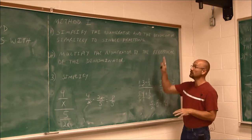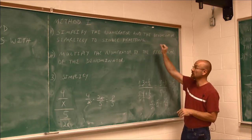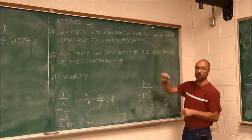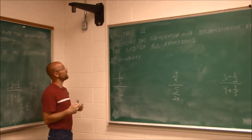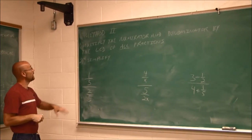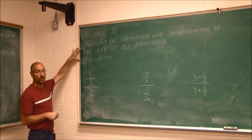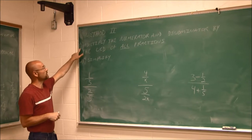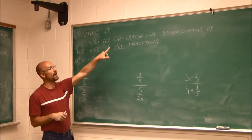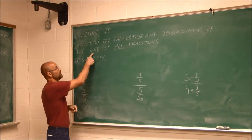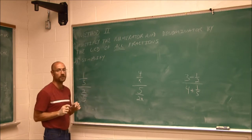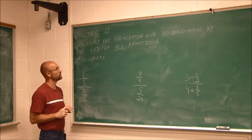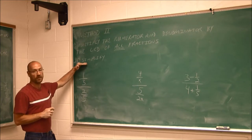So that's Method 1: simplify to a single fraction in the numerator and in the denominator, then multiply by the reciprocal. Method 2 is a favorite of mine. If you'll notice, it only has two steps. The first step — and I'm going to underline it because it's very important — is multiply the numerator and denominator by the LCD of all fractions. Then we simplify.